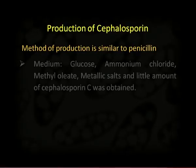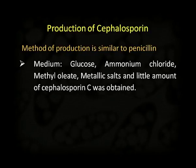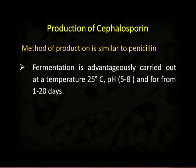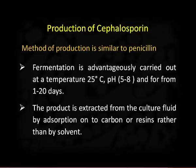Let us discuss the production of cephalosporin. The methods of production by fermentation are similar to penicillin. The production medium uses glucose, ammonium chloride, methyl oleate, and metallic salts, yielding a small amount of cephalosporin C. Production of cephalosporin C was induced by methionine, which causes thickening of the mycelium and raises cephalosporin C production to about 4 grams per liter. The fermentation is carried out at 25 degrees centigrade, optimum pH 5 to 8, and takes 1 to 20 days. The product is extracted from the culture fluid by absorption on carbon or resins rather than by solvent.